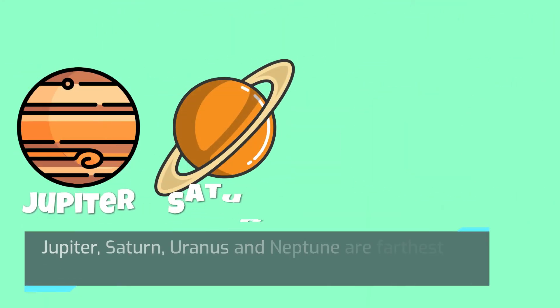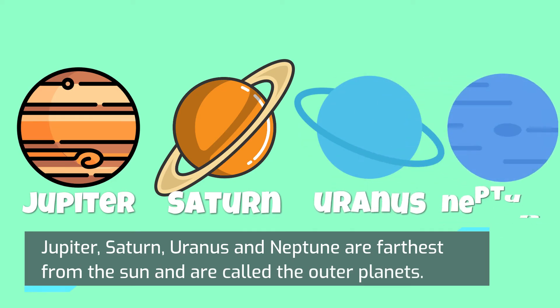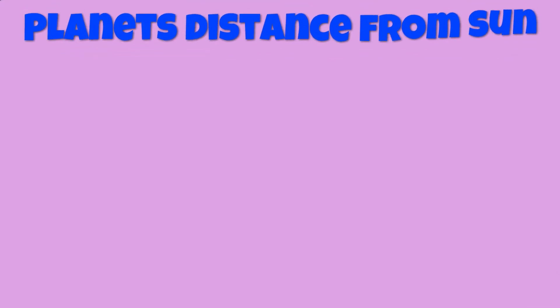Jupiter, Saturn, Uranus, and Neptune are farthest from the Sun and are called the outer planets. A great way to remember the planets in order from the Sun is to remember the acronym and rhyme: My very excellent mother just served us nachos.